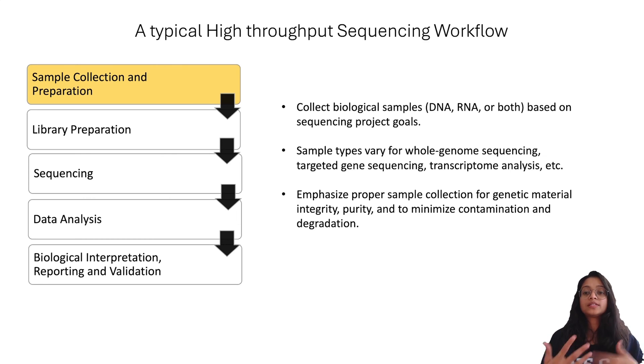The type of sample depends on the specific goals of the sequencing project, such as whether we want to perform whole genome sequencing, targeted gene sequencing, transcriptomic analysis, etc. The common sources of DNA include blood, tissues, saliva, and cultured cells. For RNA sequencing, samples may include total RNA or specific types of RNA like mRNA.